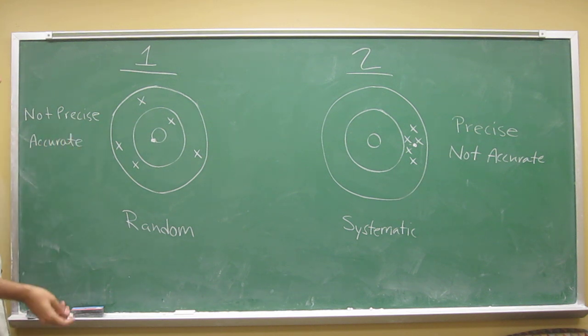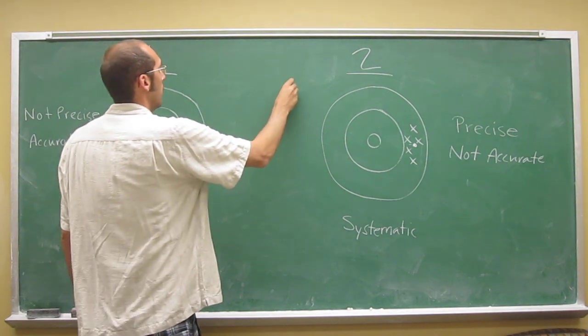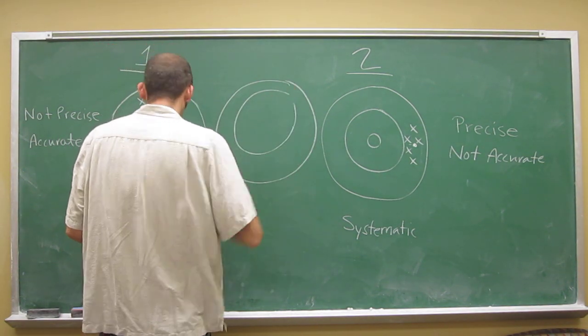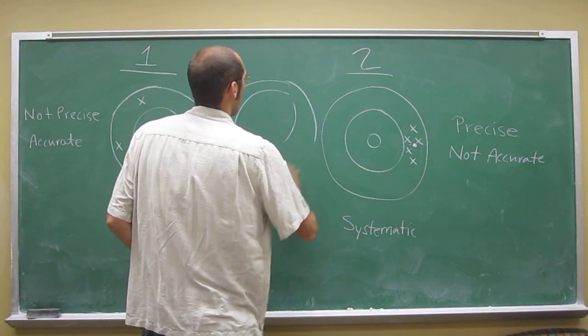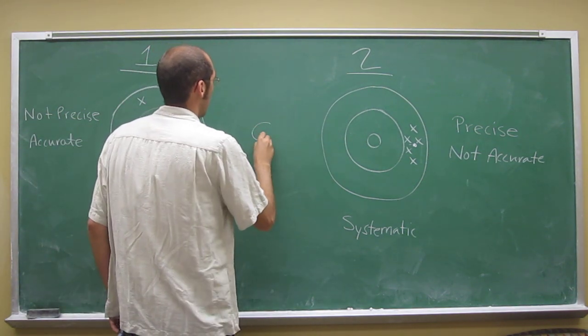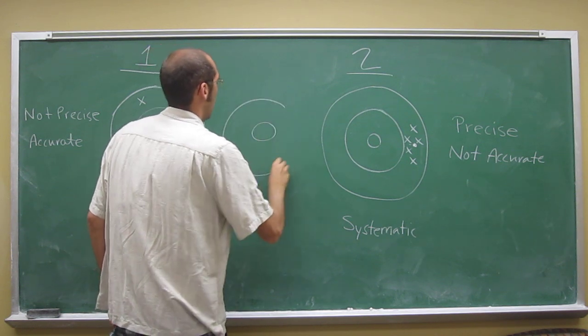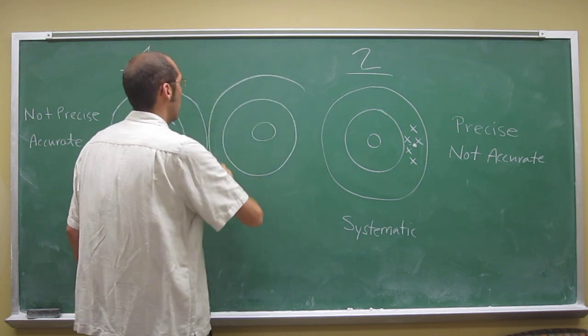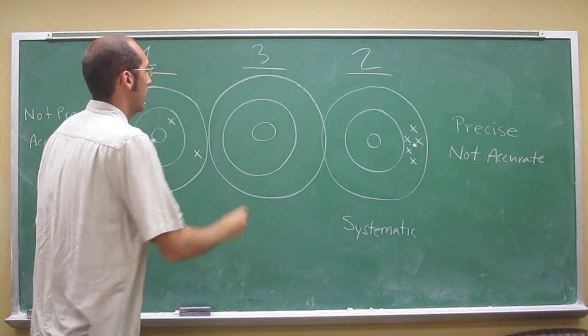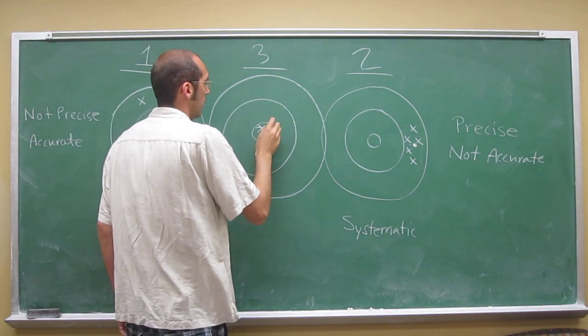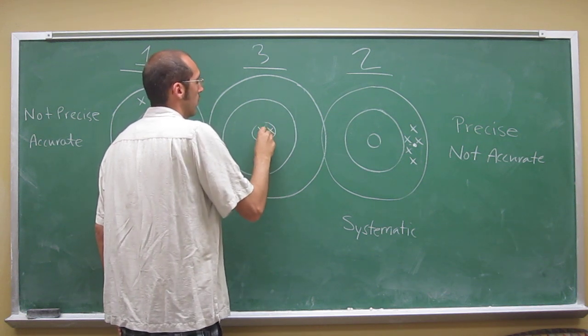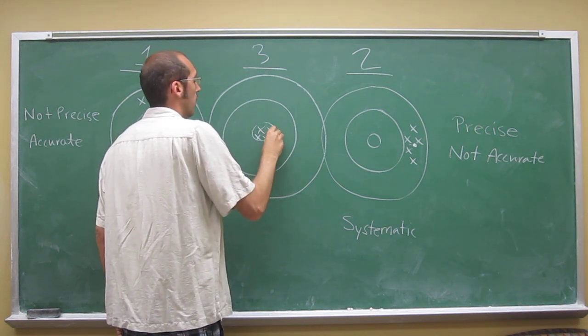Ideally, you would be the third person. Got a terrible dartboard on camera. So ideally, you would be the third player who is both accurate and precise. So one, two, three, four, five.